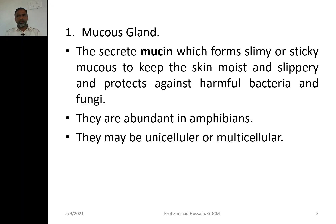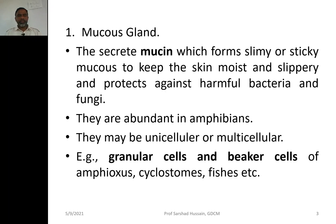Mucous glands may be unicellular or multicellular. They are variously named in different groups — for example, granular cells and beaker cells in amphibians. In cyclostomes and fishes, these structures also function as mucous glands.